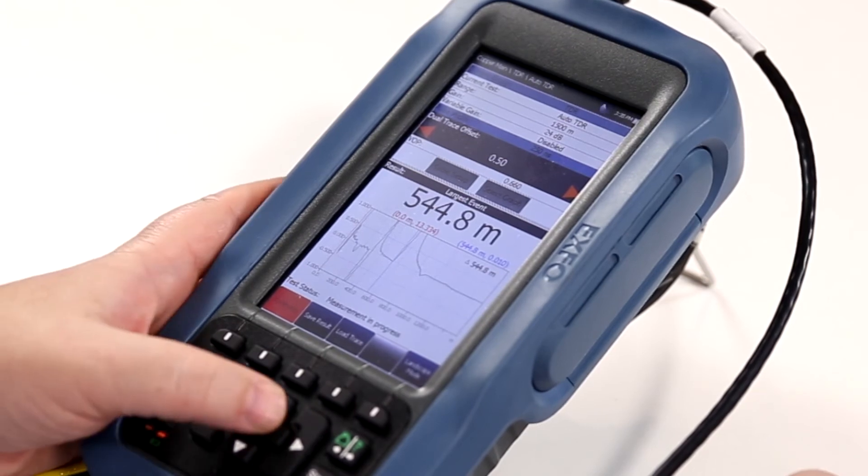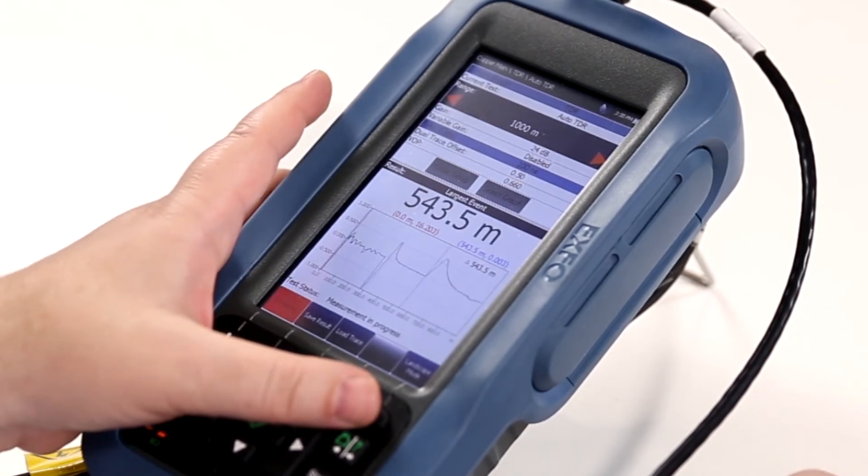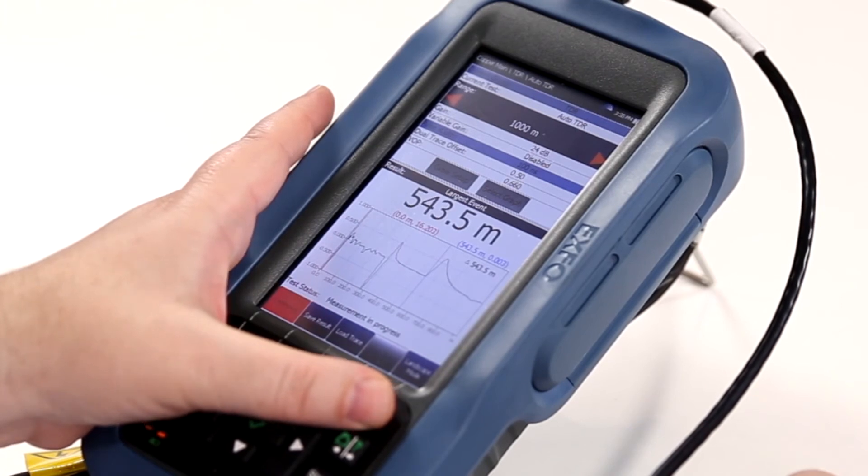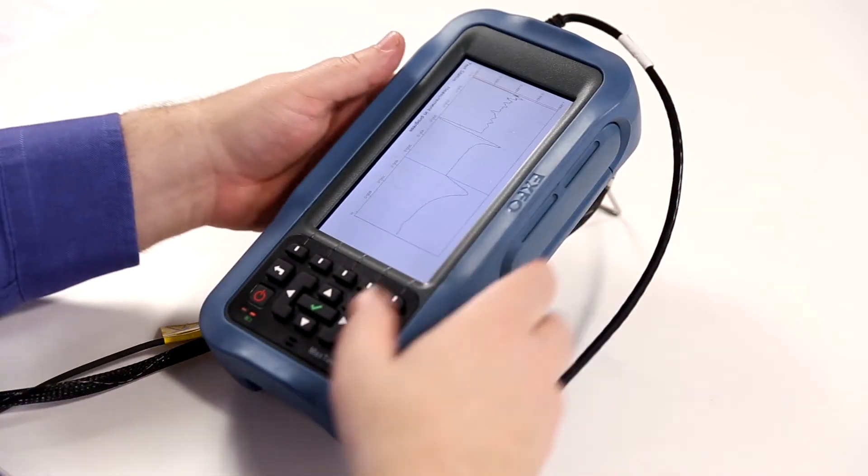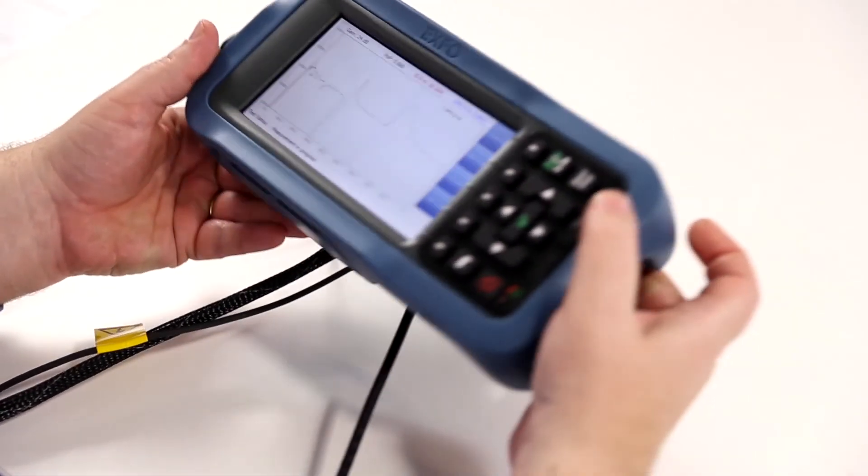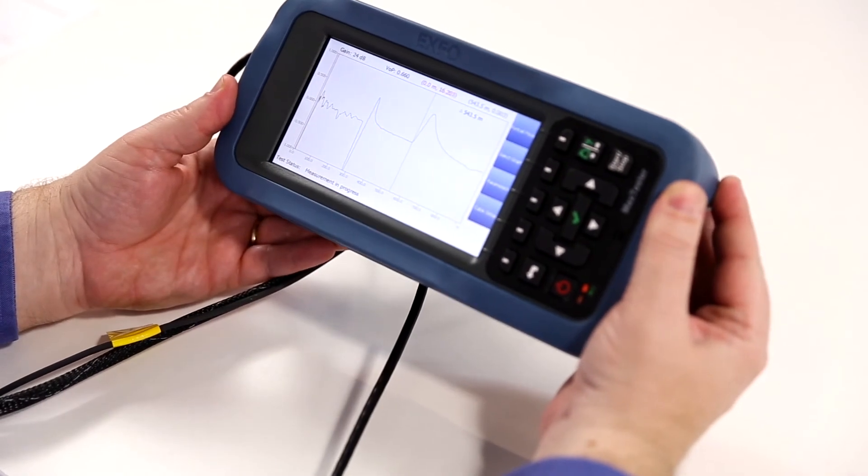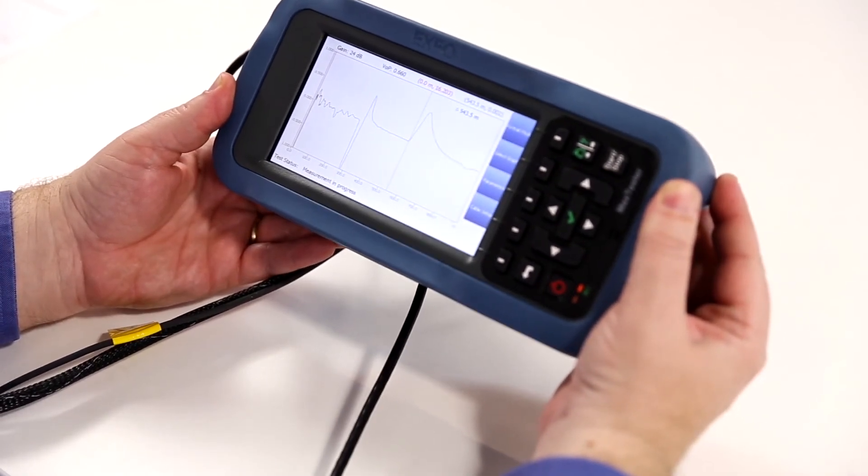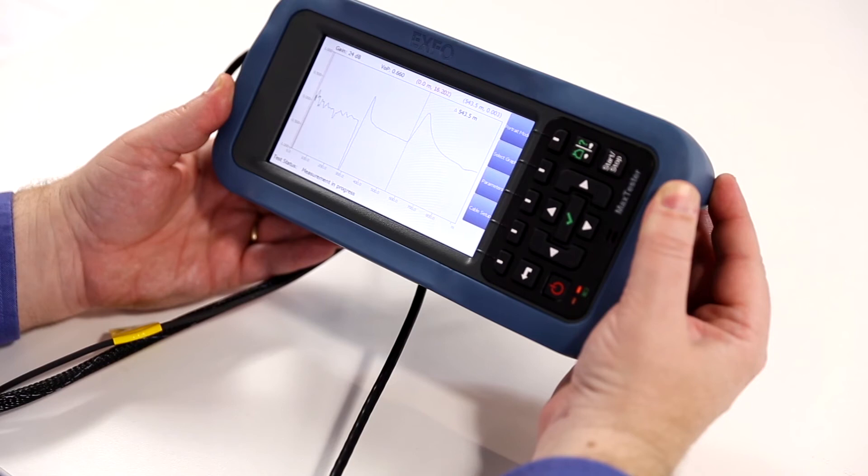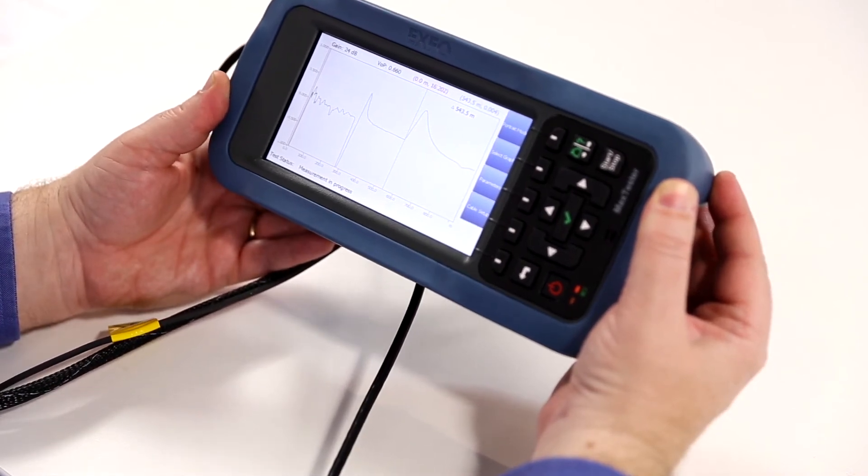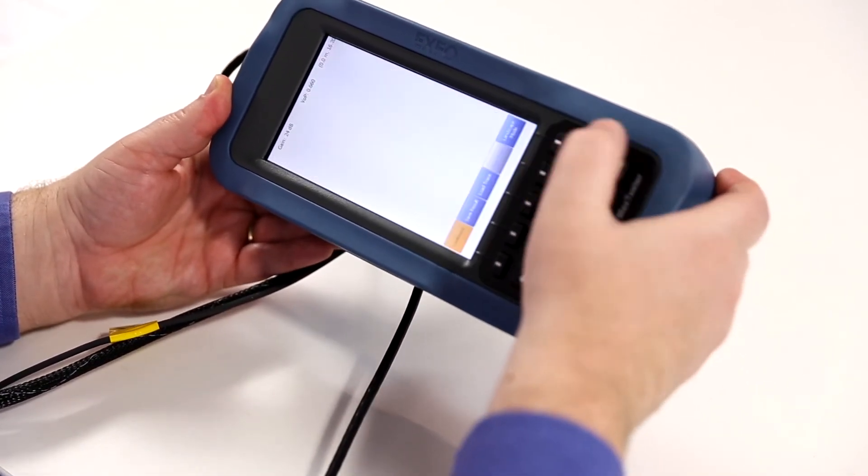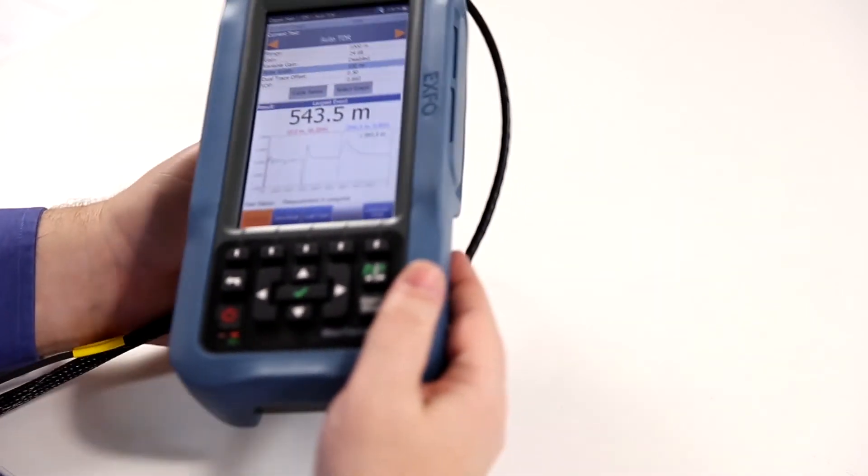In addition, what you're able to do is if you push the landscape mode, you will be able to see the TDR trace on a much larger screen. This may simplify the understanding for many users. By selecting the portrait button, we go back to the previous screen.